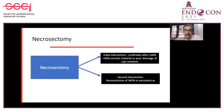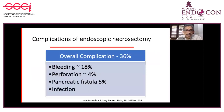Necrosectomy can be done at the time of the index intervention, especially if using a LAMS and if more than 40 percent necrotic material is present or there is poor drainage. A second intervention can be done if there is non-resolution of walled-off necrosis or persistent symptoms. Complications of necrosectomy include bleeding, perforation, pancreatic fistula, or infection. The overall complication rate has been documented as 36 percent.